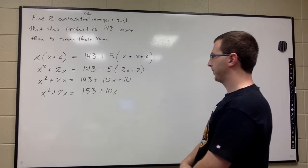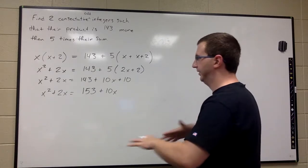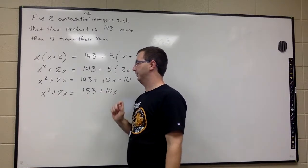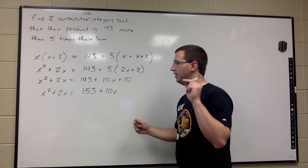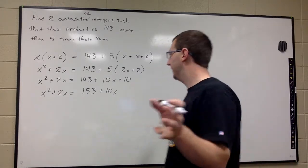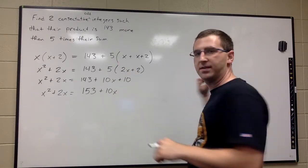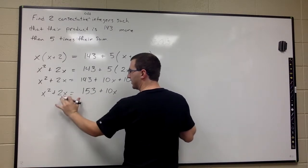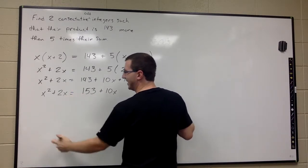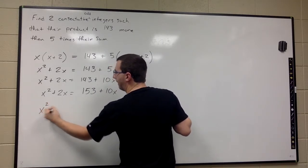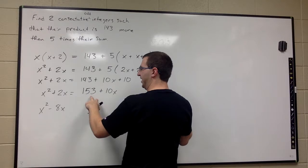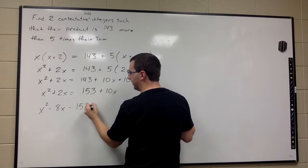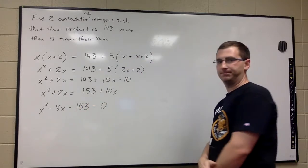We have an exponent of 2, so this is a quadratic equation — we need it equal to zero in standard form. It's easier to factor when the X squared term is positive, so we move everything to that side. Subtract 10X from both sides and subtract 153 from both sides: X squared plus 2X minus 10X minus 153 equals zero, giving us X squared minus 8X minus 153 equals zero.